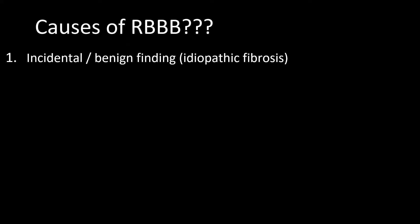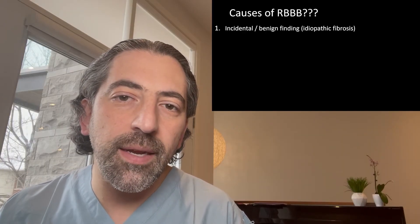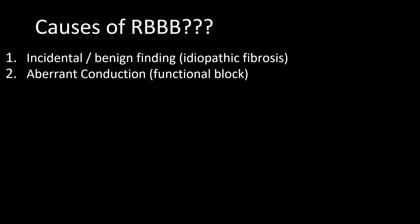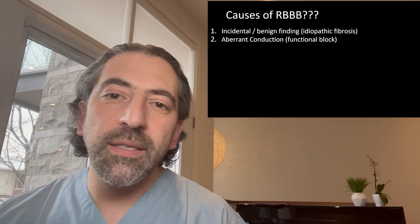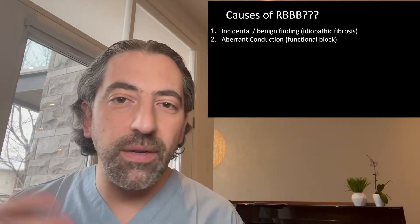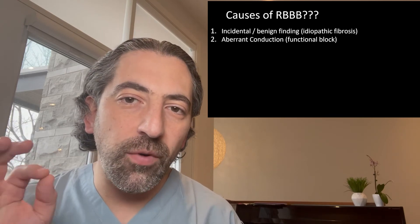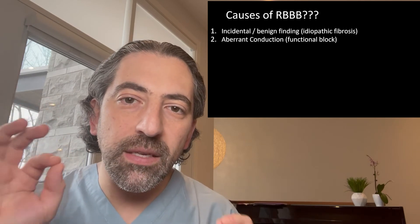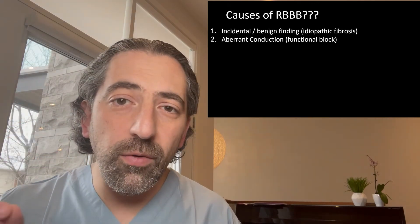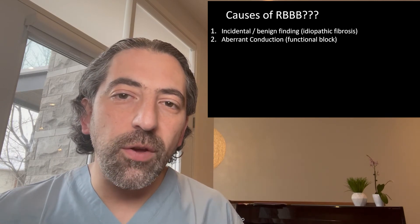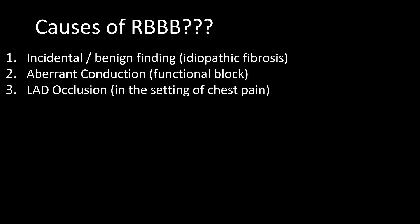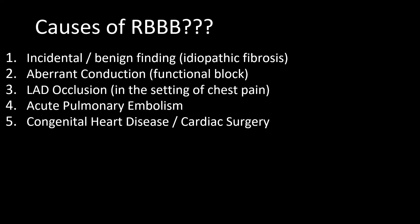What causes right bundle branch block? There are multiple causes. It could be an incidental or benign finding because of idiopathic fibrosis or scarring of the conduction system, and in these cases it doesn't necessarily carry any negative prognostic implications. It could also be due to aberrant conduction, meaning functional block — if signals come down the AV node very quickly because of an arrhythmia, the right bundle has a tendency to be refractory before the left bundle, which may cause right bundle branch block simply because of the rate, and it could reverse back to normal conduction if the rate slows. We will discuss functional blocks in a future lecture. Right bundle branch block in the setting of chest pain can signal acute left anterior descending artery occlusion. Acute pulmonary embolism can also cause right bundle branch block, as can congenital heart disease or cardiac surgery.